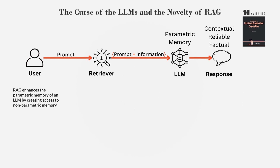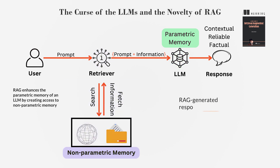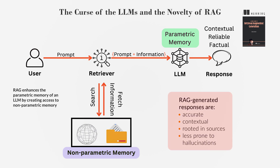Introduced by Lewis et al. in May 2020, RAG combines pre-trained parametric memory — information stored in the model — and non-parametric memory, which is external information. RAG uses both types of memory to generate responses that are accurate, contextual, rooted in sources, and less prone to hallucinations. By doing this, RAG builds user confidence in LLM responses and has acted as a catalyst in the propagation and acceptance of LLM-based applications.